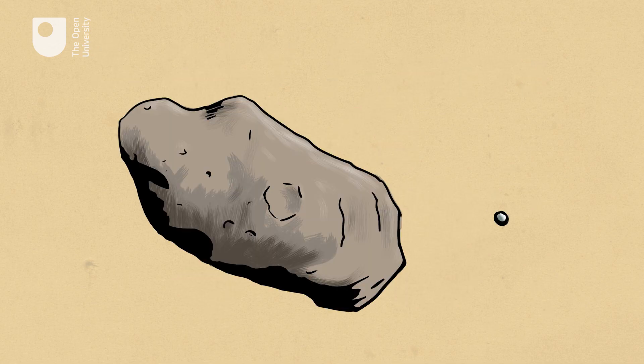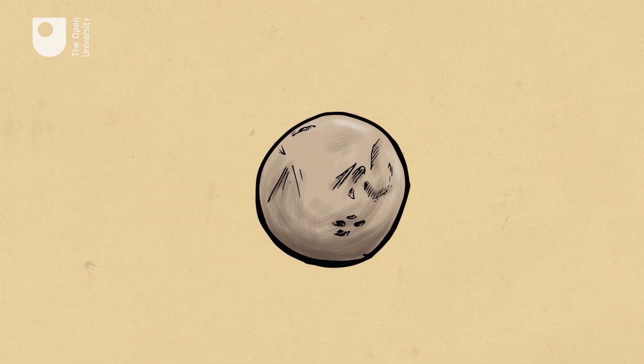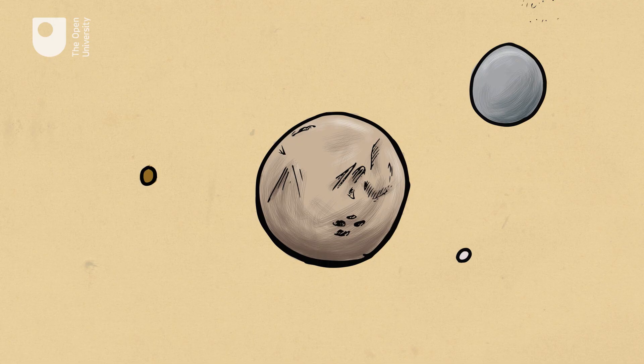Things smaller than planets can have moons too. Even asteroids only a few kilometres across can have a smaller asteroid orbiting them. Pluto is no longer regarded as a planet, it's too small, but it has five moons. Several other icy bodies similar to Pluto are also known to have moons.